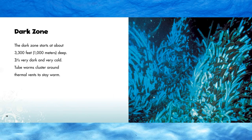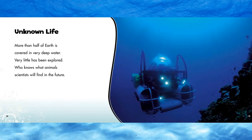Dark zone. The dark zone starts at about 3,300 feet or 1,000 meters deep. It is very dark and very cold. Tube worms cluster around thermal vents to stay warm. Unknown life — more than half of Earth is covered in very deep water. Very little has been explored. Who knows what animals scientists will find in the future.